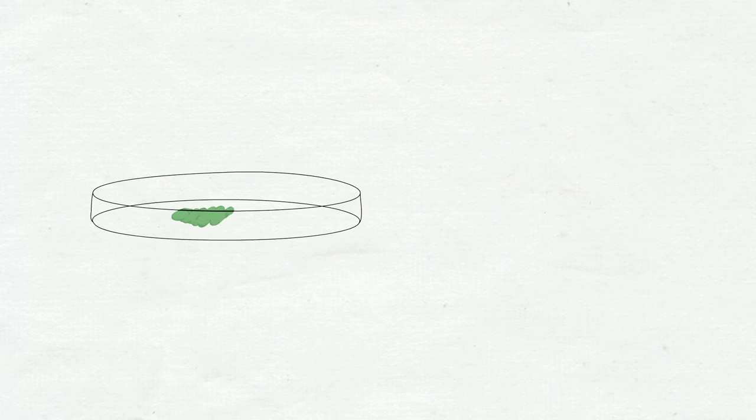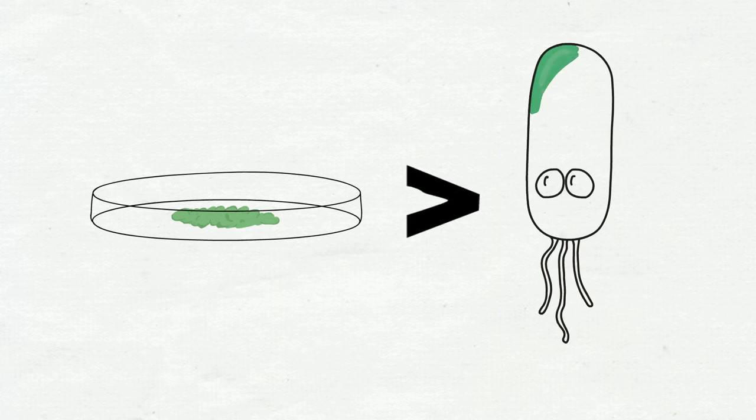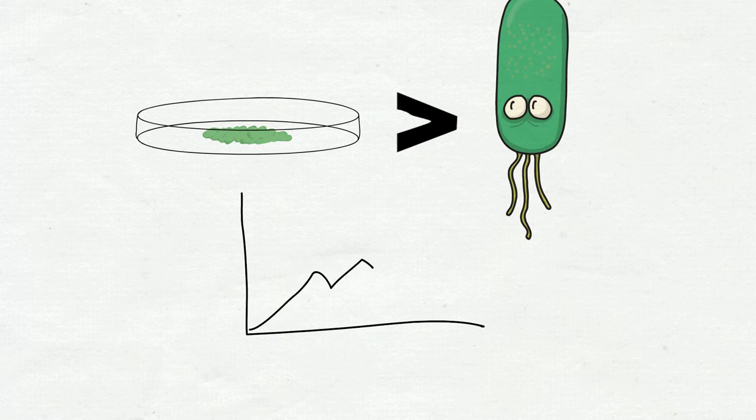The medium on the petri dish had more nutrients as compared to the living organism, thus enabling the bacteria to grow. The idea of differing nutrient availabilities in vitro and in vivo forms the basis of Somaya's research project.